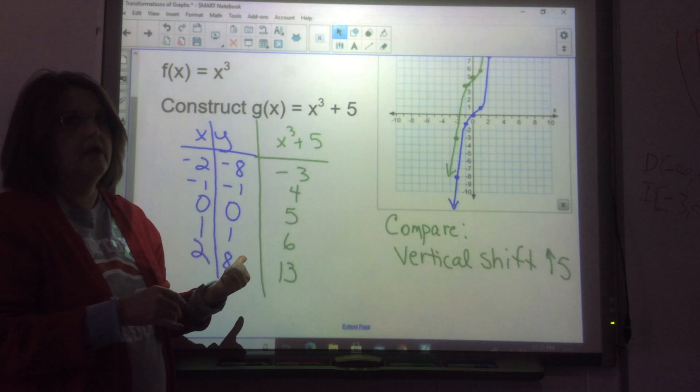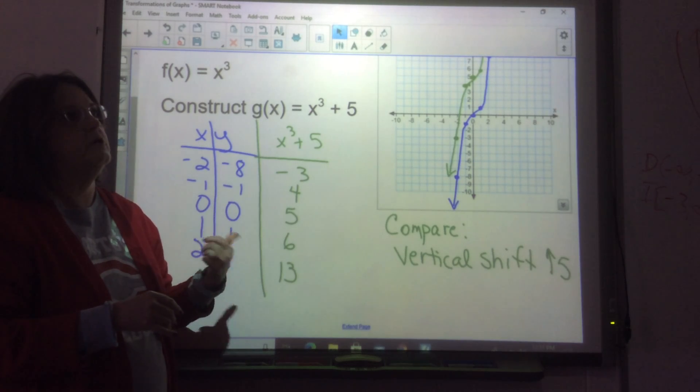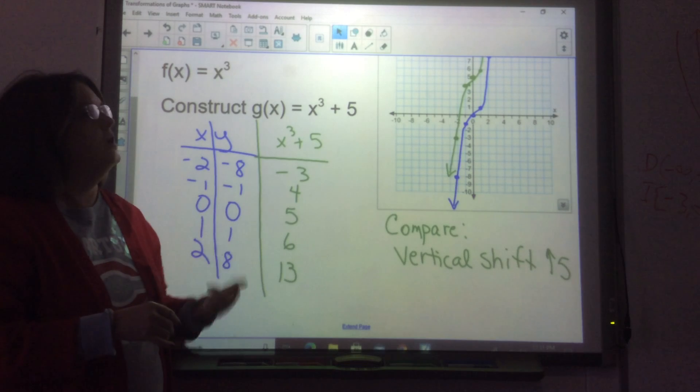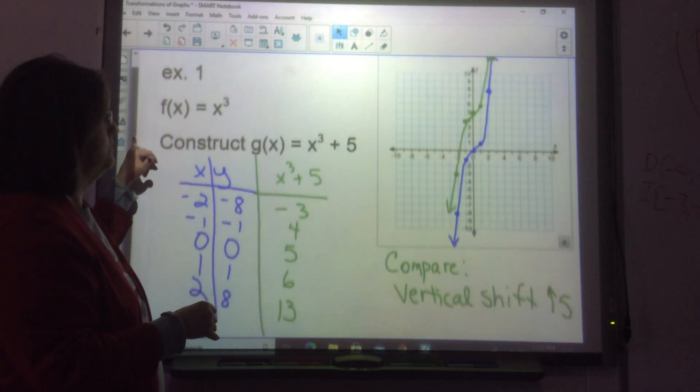negative 8. When you cube things, 1 to the third power is 1, 2 to the third power is 8. So, it's easier to take it and move it.